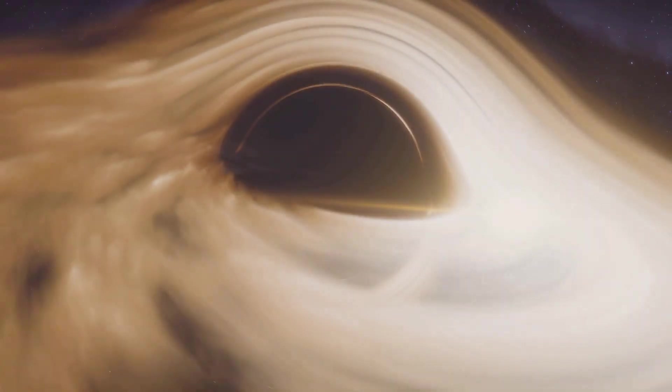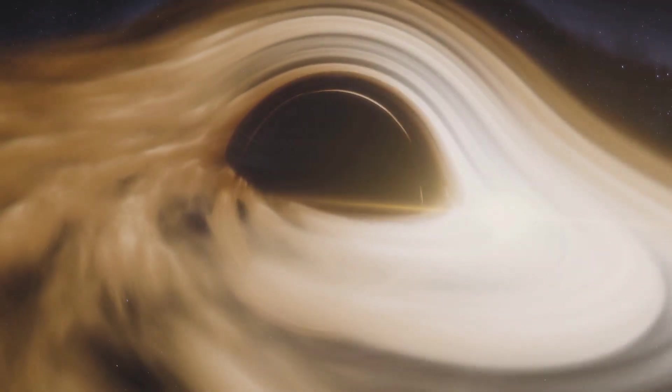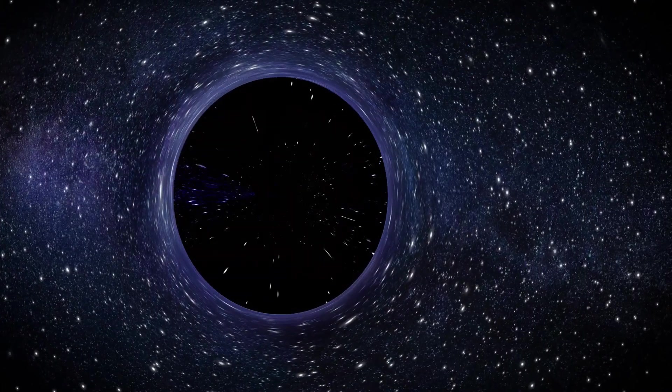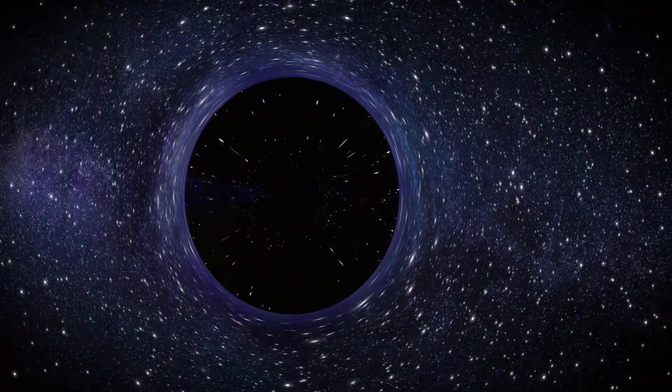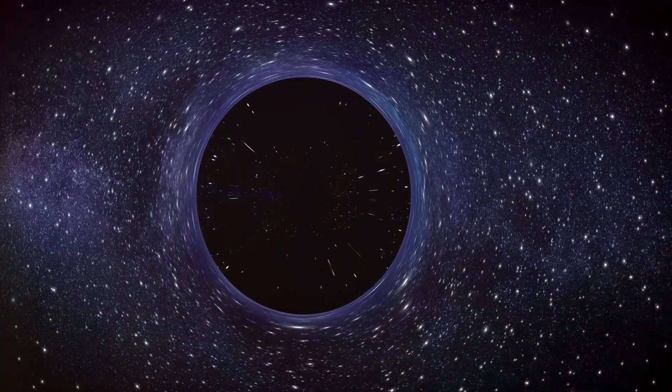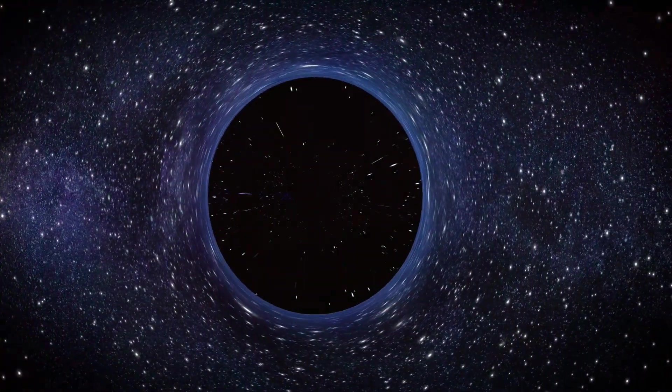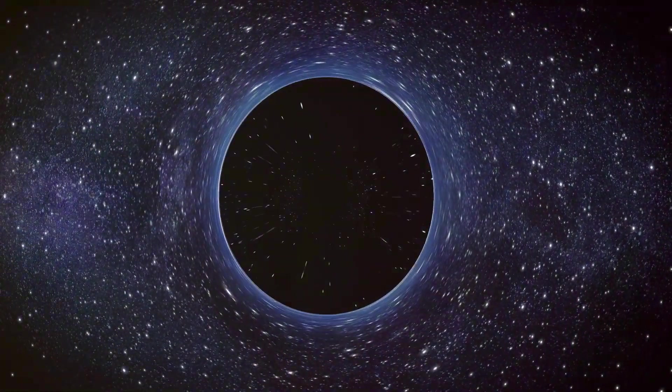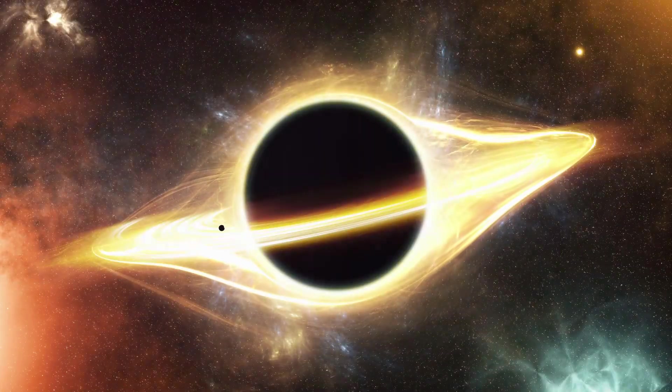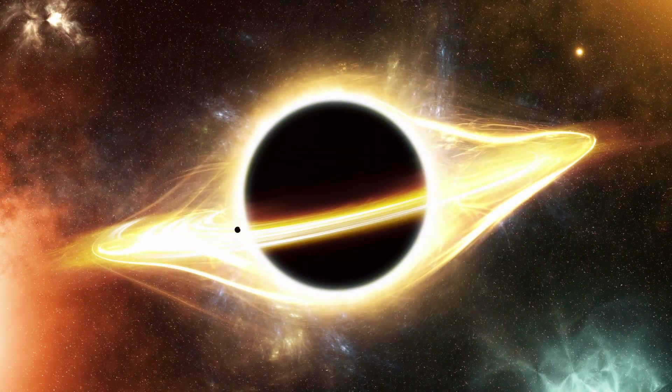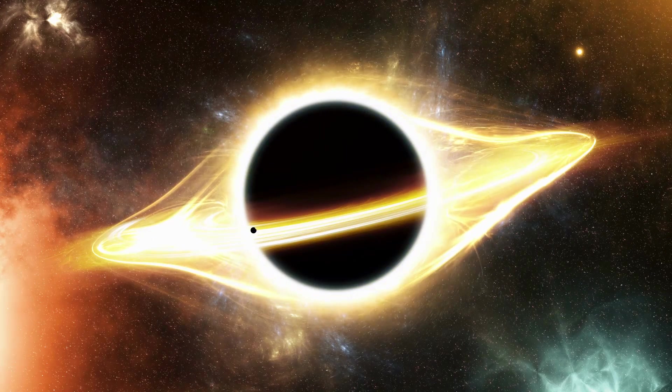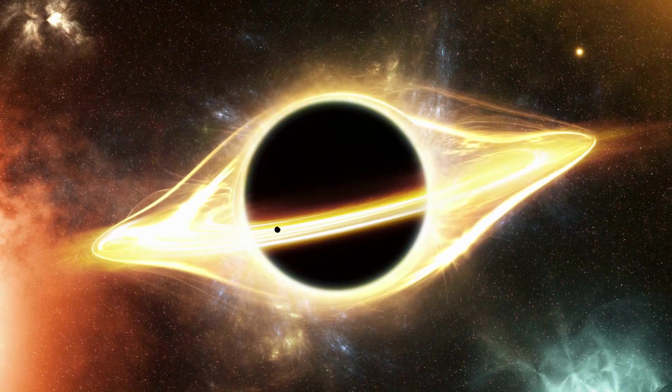As it moves through space, it pulls in everything that comes too close, from stray cosmic dust, to wayward stars, and even other black holes. Yes, you heard that right. When two black holes come close enough, they can merge into a larger one, in a cosmic dance of gravity that sends ripples through the very fabric of space and time.